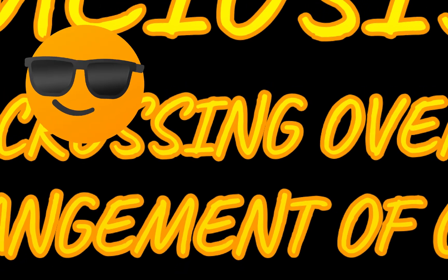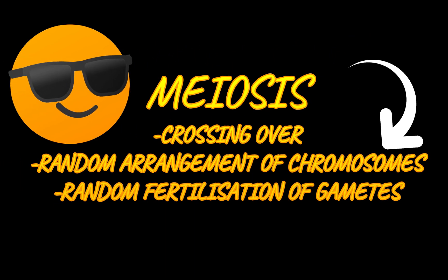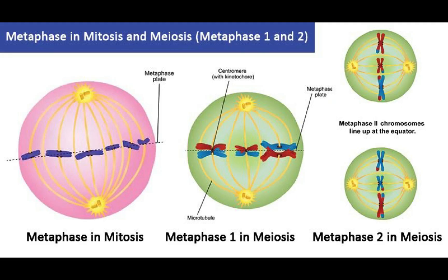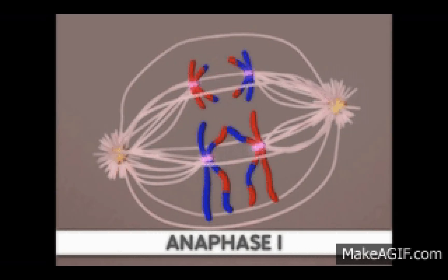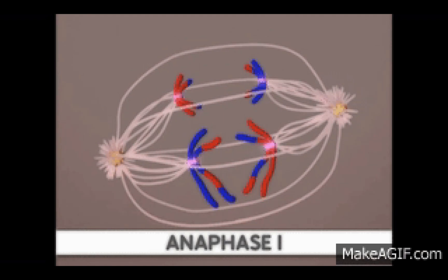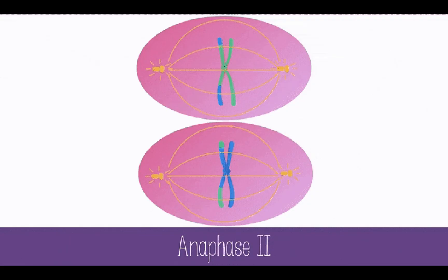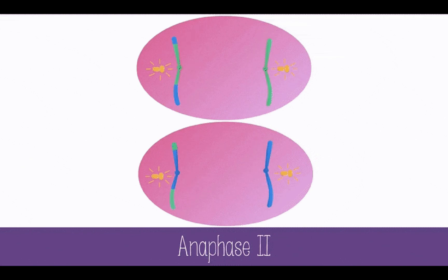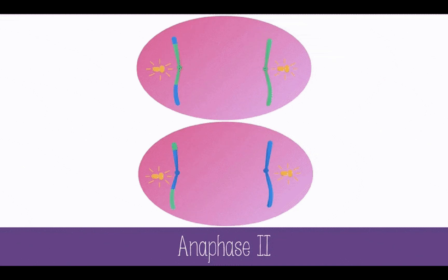What else happens during meiosis that could result in variation? The random arrangement of chromosomes. Do you remember the chromosomes arranging randomly at the equator during metaphase 1 and metaphase 2? As a result, during anaphase 1 or anaphase 2, the chromosomes or chromatids move to the poles in different combinations. This leads to gametes that differ from each other, and that is how the random arrangement of chromosomes during meiosis contributes to variation.